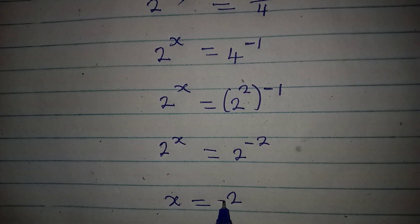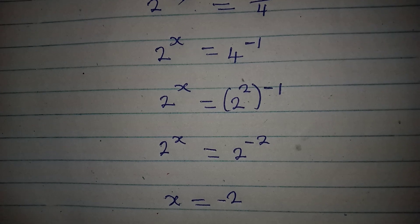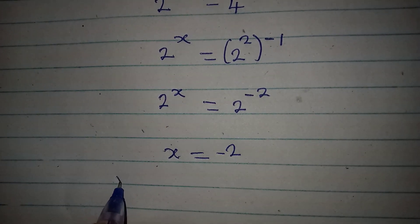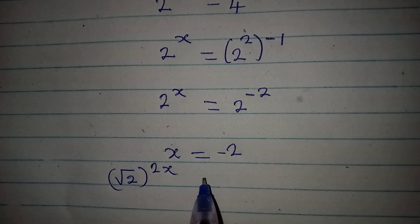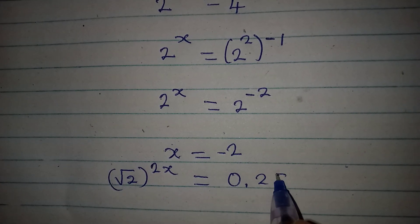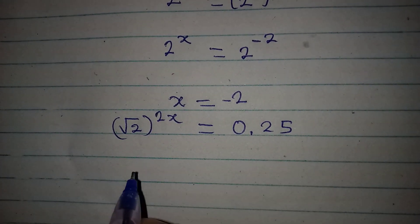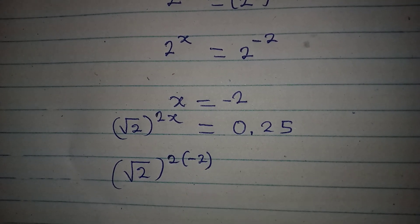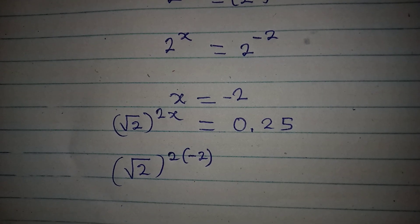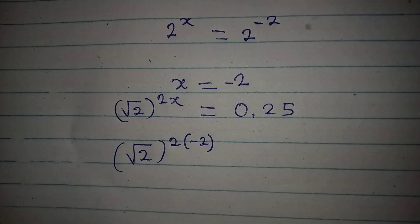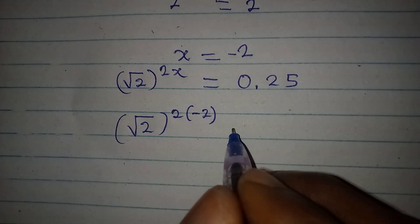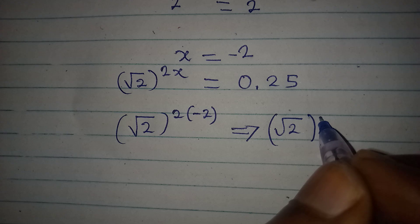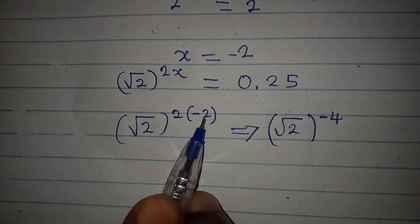Now let's substitute x = -2 back into the original equation to confirm. The original equation is the square root of 2 to the power of 2x equals 0.25. That means we have the square root of 2 to the power of 2 times minus 2. We want to verify this equals 0.25. This gives us the square root of 2 to the power of minus 4, because 2 times minus 2 is minus 4.